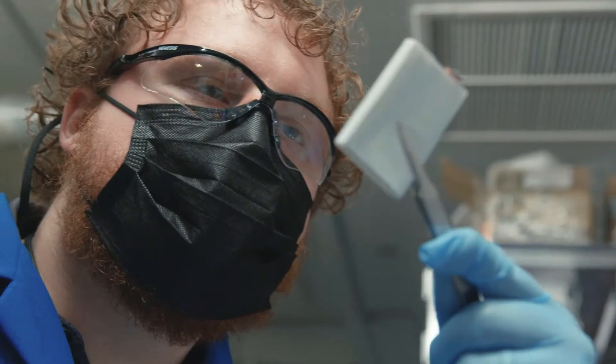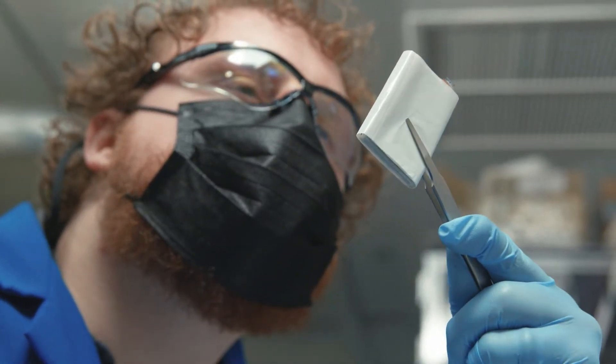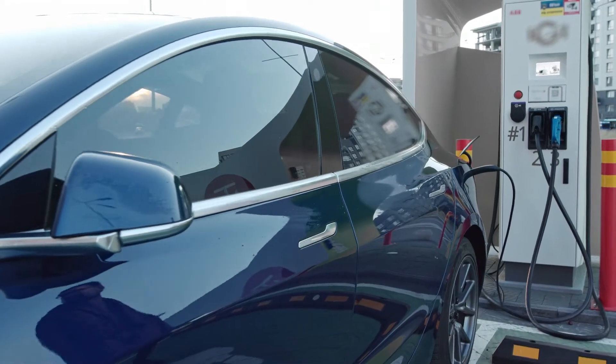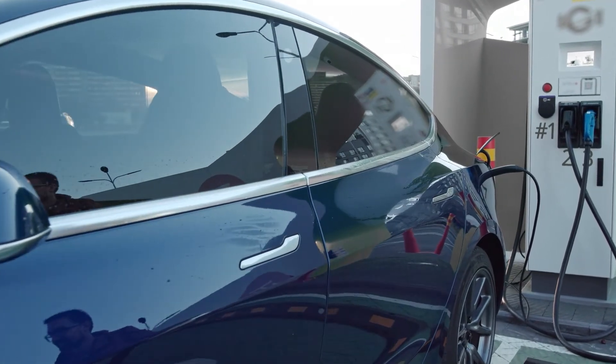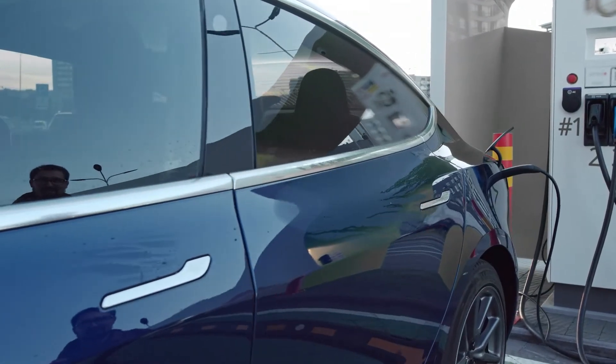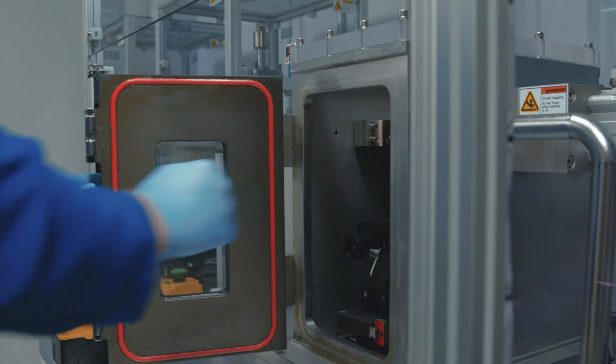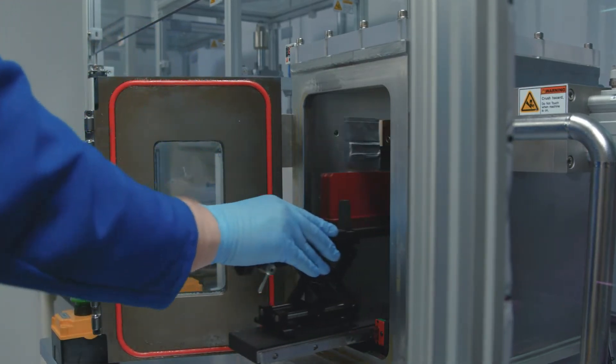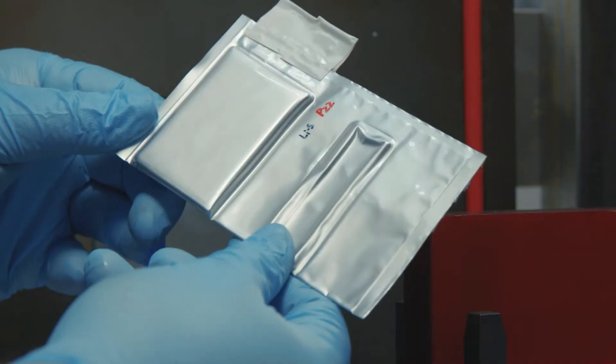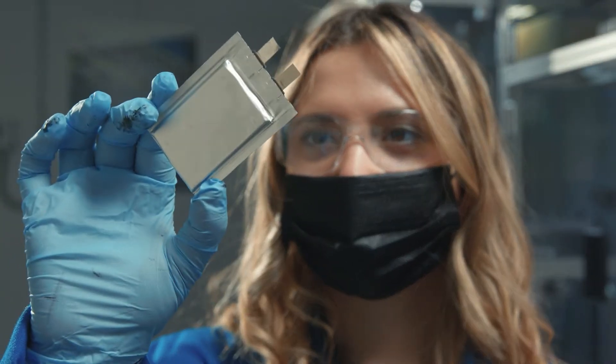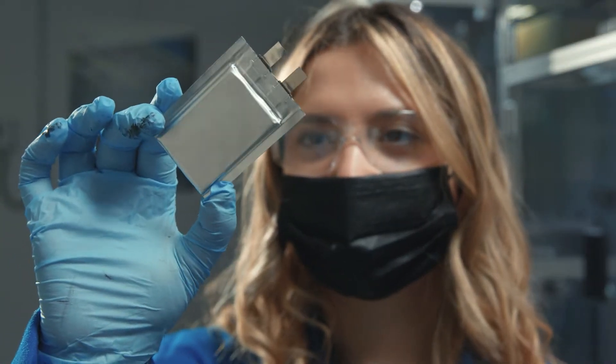Here, PNNL leads the Battery 500 Consortium, a national effort to double the energy stored in state-of-the-art lithium-ion batteries for vehicles. These pouch cells have demonstrated very high energies, more than 350 watt-hours per kilogram, and record cycling stability by implementing innovations developed from the consortium.